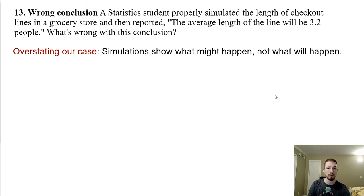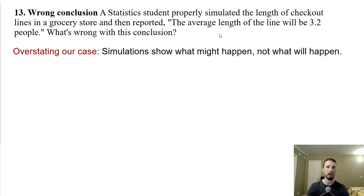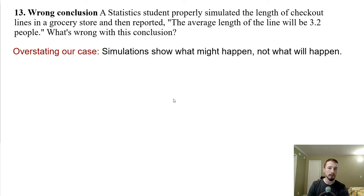Number 13: a student properly simulated the length of checkout lines in a grocery store and reported 'the average length of the line will be 3.2 people.' That overstates the case — simulations show what might happen, not what will happen. What the student should say is: 'Based on our simulation, we can expect an average line length of about 3.2 people' — not that it will be, but that we can expect it on average.